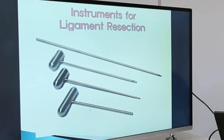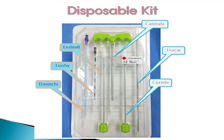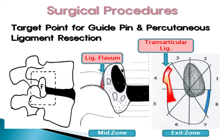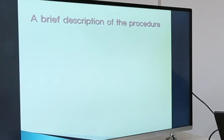We then use instruments for ligament resection. The instruments include a trocar and trocar cannula, a curette, an end mill which is a type of drill, and we also have a disposable kit including cannula, trocar, curette, end mill, torn needle, and Da Vinci catheters. The target point for this surgical procedure is the back part of the pedicle cannula, at the mid-zone where ligamentum flavum is located, and in the exit zone where transforaminal ligaments are found. The target ligament for resection at L1 to L4 level is the transforaminal ligament of the external foramen and also ligamentum flavum. At L5 level, the transforaminal ligament is the target ligament for resection.